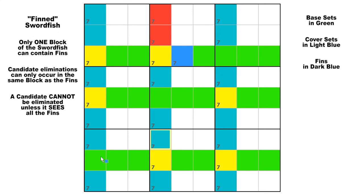And if there is an additional fin here, you get the same result. These two fins act as a unit. If they are both false, these two candidate 7s in the red cells are false because of the swordfish. And if either one of the fins is true, those same two candidate 7s in the red cells would also be false, because there can only be one 7 placed in that block. So those two 7s in the red cells are false either way and can be eliminated.